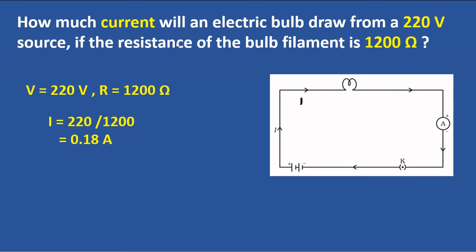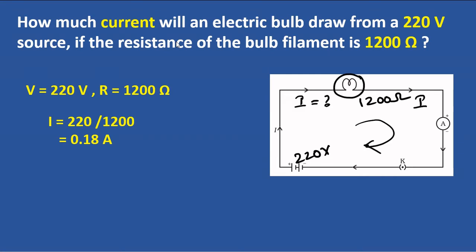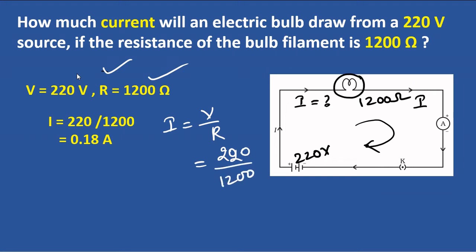Problem: find the current through a bulb with resistance 1200 ohms connected to 220 volts. Using Ohm's Law, I = V / R = 220 / 1200. So the current I = 0.18 amperes.